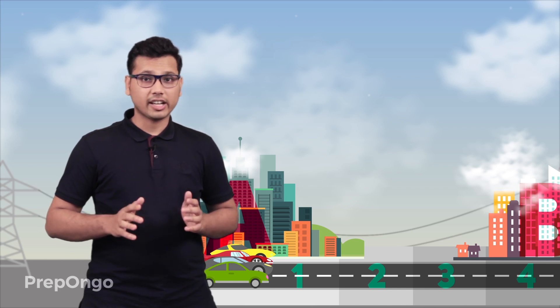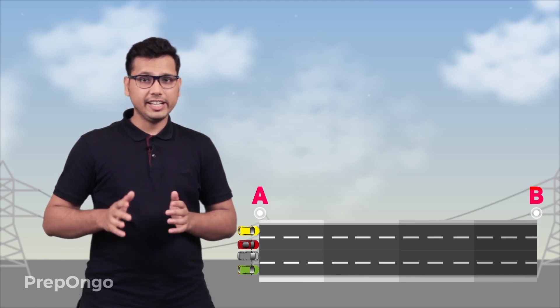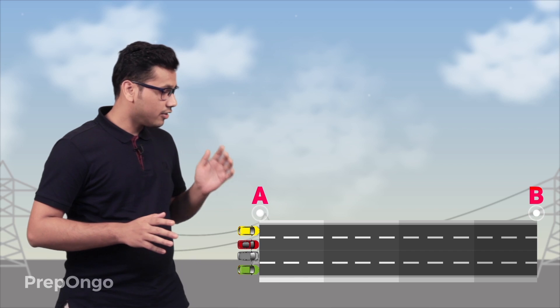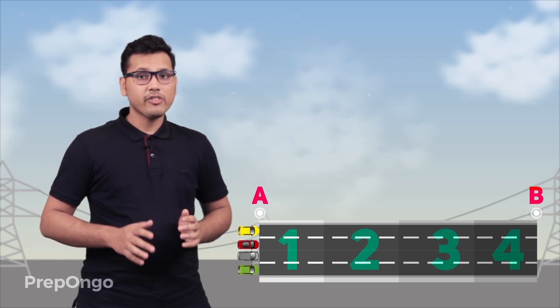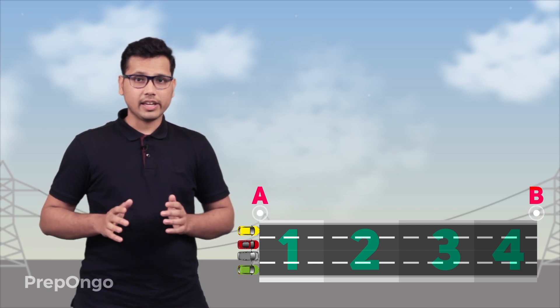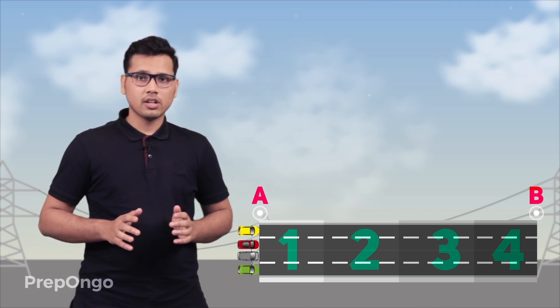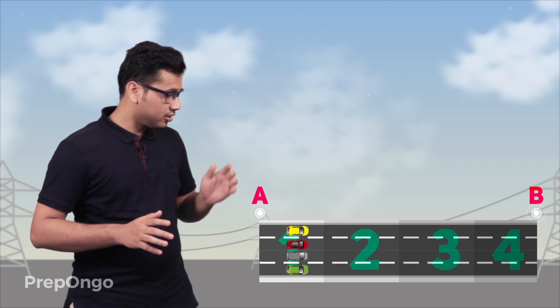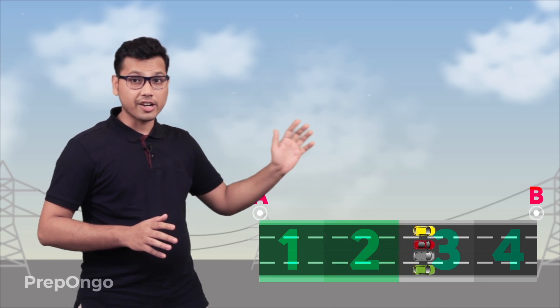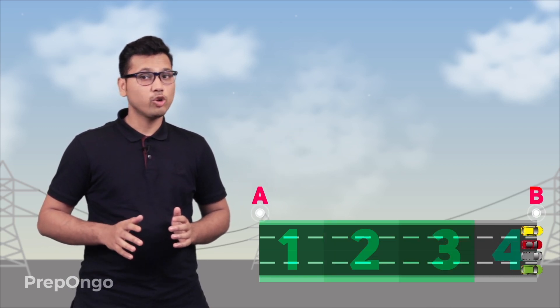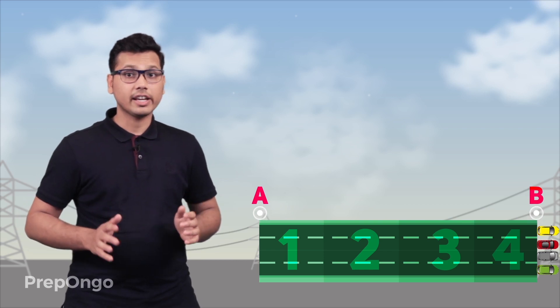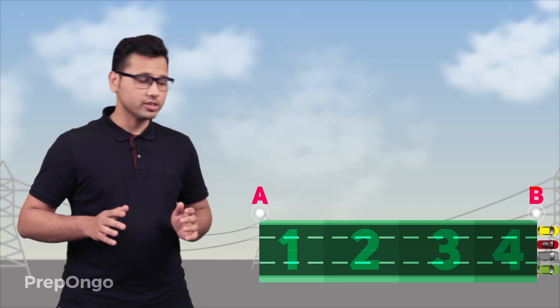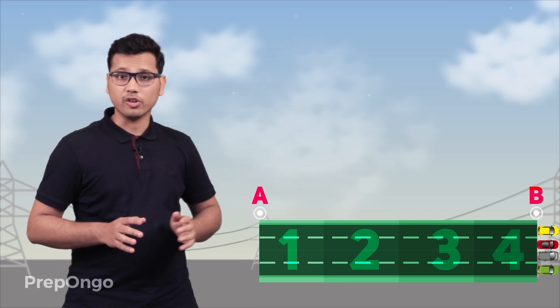Let's say from city A to city B. You all have individual cars and there are four roads connecting A and B, connected in series or end-to-end fashion — road one, two, three, and four. When you start from end A to reach end B, all four cars have to travel road one, road two, road three, and road four, as there are no other options.